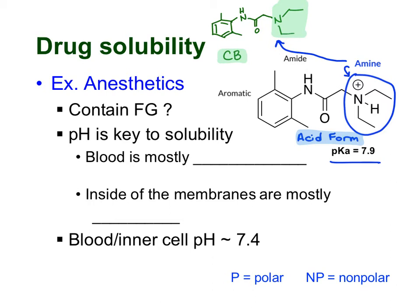So let's try to figure out what's going on inside our body. The volume of your blood is mostly made of water — so that's going to be polar. Then inside of your membranes, that's going to be mostly inside the phospholipid bilayer, and the inside of that bilayer should be non-polar. The pH of your blood and inside of your cells is usually about 7.4 — remember, that's very close to neutral. So with all that set up, let's see what would happen to this molecule inside of the body when it goes from your blood to inside your cells.